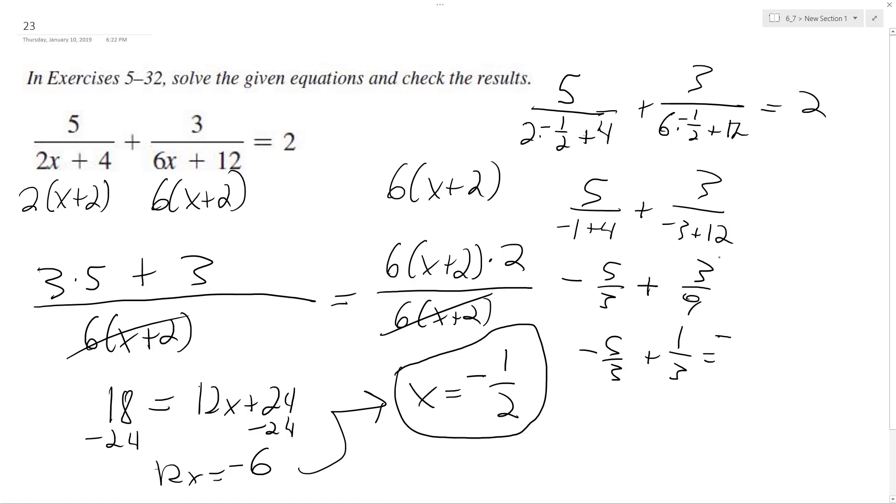Oh, I know what it is. This shouldn't be a negative. It's just 5 thirds. So 5 positive 5 thirds plus 1 third is equal to 6 over 3, which is equal to 2 equals 2. So that proves that x equals negative 1 half is correct.